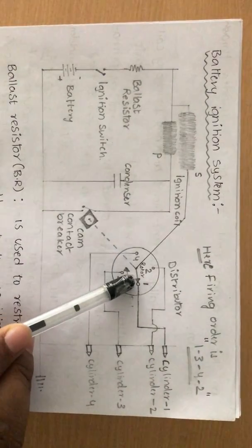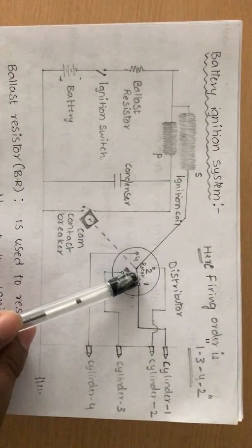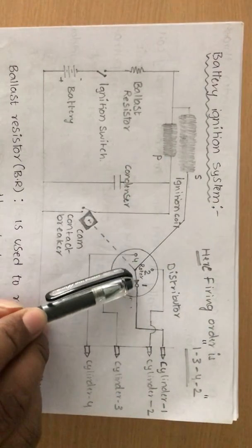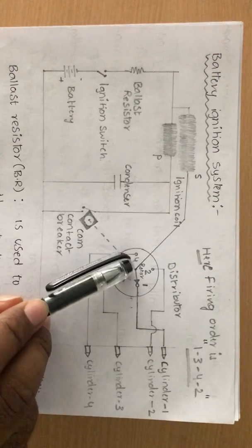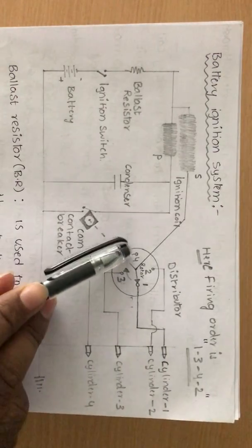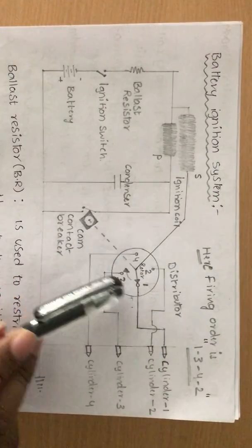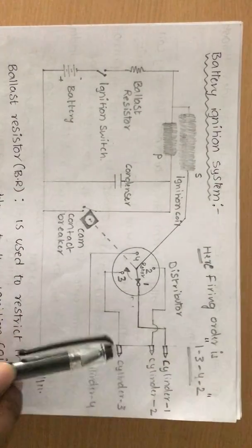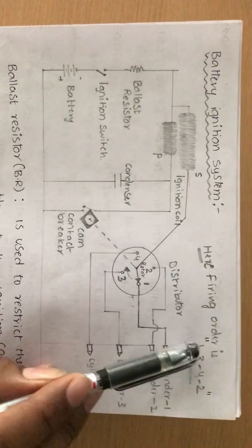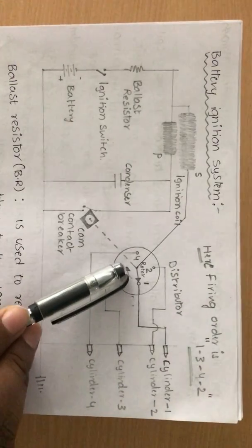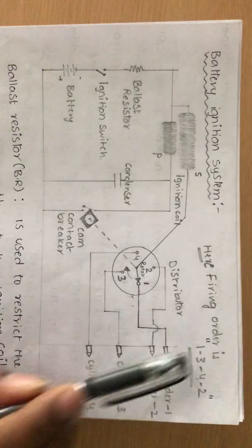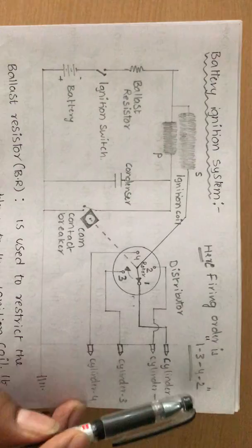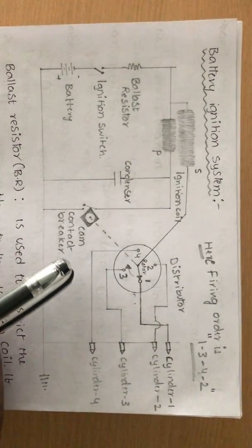For example, if the rotor's arrow mark is connected to cylinder one, then cylinder one is fired. Further clockwise movement of the rotor leads to the third point, so the third cylinder is fired. Further movement goes to the fourth cylinder, then the second cylinder. So the firing order is 1, 3, 4, 2 — which you already know.